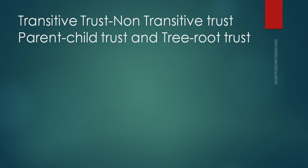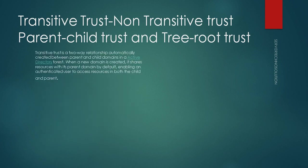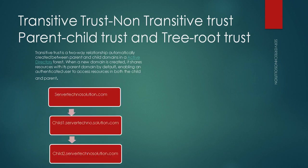Now let's come to transitive and non-transitive trust, which we can also call parent-child trust and tree root trust. Transitive trust is a two-way trust automatically created between parent and child domains. The parent domain is servertechnosolution.com and the child is child1. As soon as we promote a child domain within a parent domain, there is automatically a trust between them — they can access each other's resources.